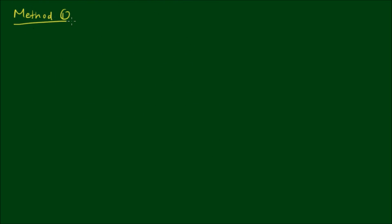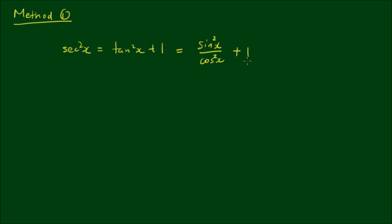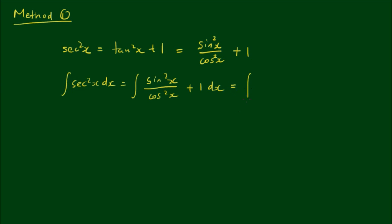With Method 1, we take sec²x and use the Pythagorean identity: it's equal to tan²x plus 1. Since tan x equals sin x over cos x, tan²x equals sin²x over cos²x. So we can write this as sin²x over cos²x plus 1, and of course we can split this into two separate integrals.